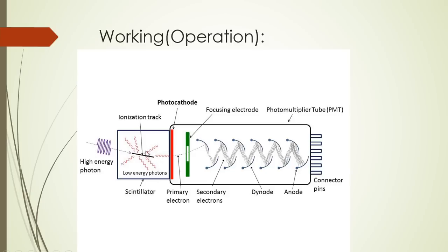When the radiation falls on the scintillator it produces low energy photons, which are then made to fall on the photocathode. It is called a photocathode because it is a negative electrode covered with a photosensitive material. When photons are incident on it, due to the photoelectric effect they liberate photoelectrons, which are made to pass through focusing electrodes so that they are incident on another electrode called the dynode. There are several of these electrodes, each at a relatively higher potential than the previous one.